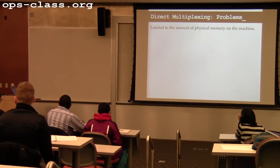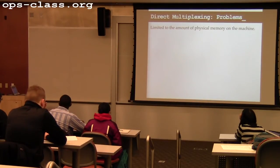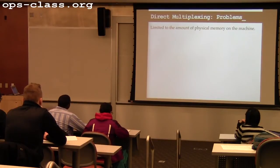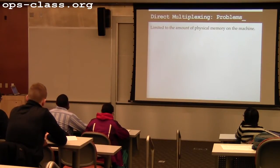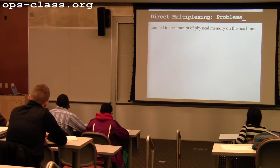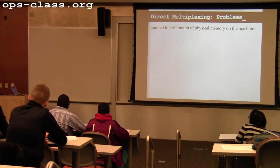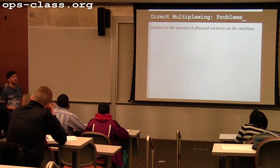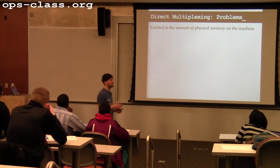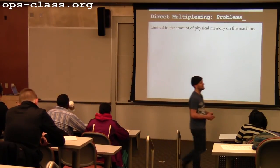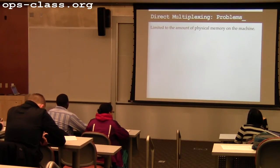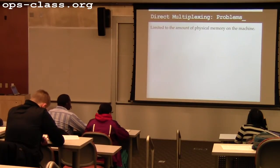Let's think about some clear problems with this idea of direct multiplexing — just directly handing out memory. The first issue is that the amount of memory in use by processes is limited to the physical memory on the machine. This might not seem like a big limitation, but we're going to talk about abstractions that allow processes to have a much more expansive view of memory than what's physically available. The big key abstraction is virtual memory, which will give us all sorts of neat powers including making the machine look like it has a lot more memory than it actually has.